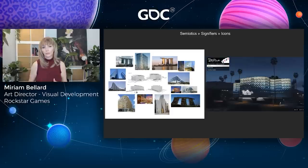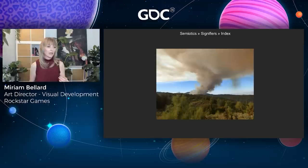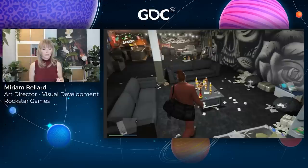An index signifier is one where we have a linked or causal relationship between the signifier and the signified. The smoke is an index signifier, and what is signified is the fire that's causing the smoke. An in-game example would be all the money, drugs, and alcohol lying around — those are all index signifiers communicating what the player and the characters have been doing.